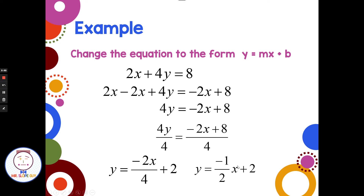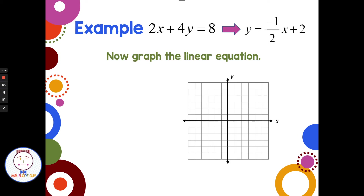I don't mind having a fraction here — I actually like it because it's my slope number. It's my rise and run anyway, so having a fraction there actually helps with graphing. So I've taken 2x plus 4y equals 8 and changed it into y equals negative one-half x plus 2.